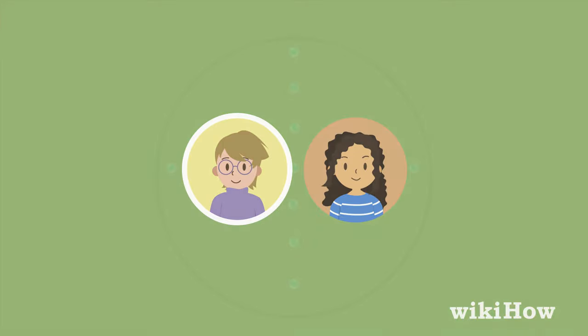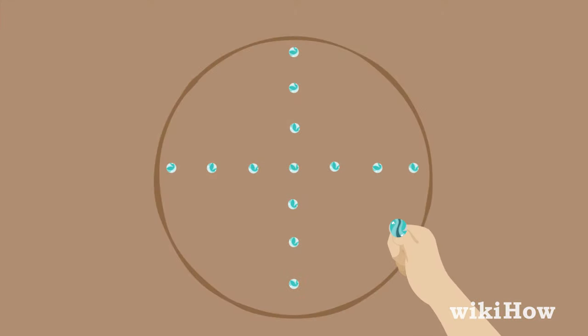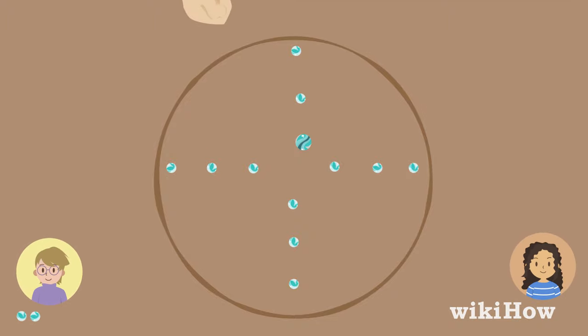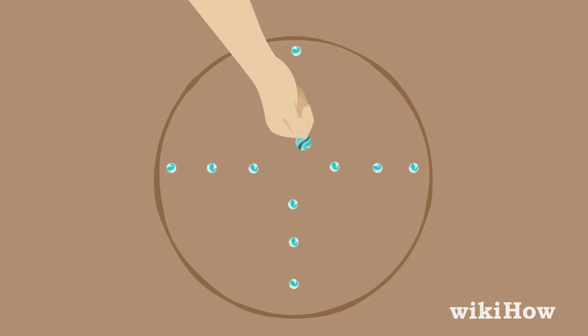Choose a player to go first. On a player's turn, they kneel outside of the circle and flick their marble into it using their thumb. If they strike a MIB and knock it out of the circle, and their marble stays inside of the circle, they win the MIB they knocked out and take another shot from inside the circle wherever their marble landed.